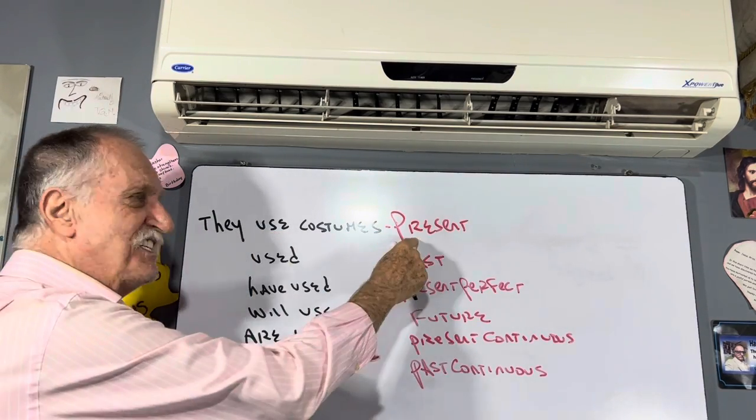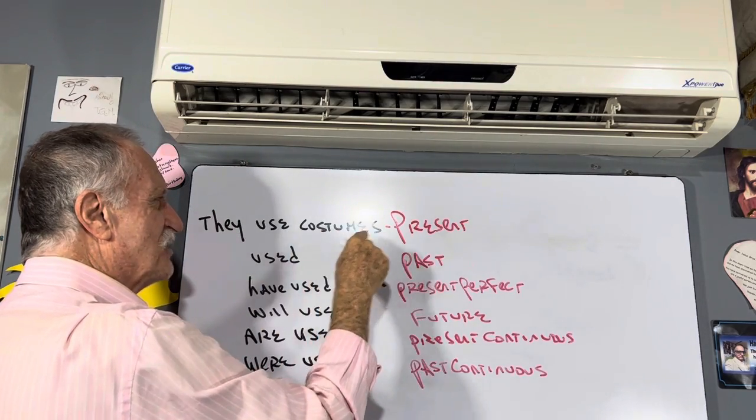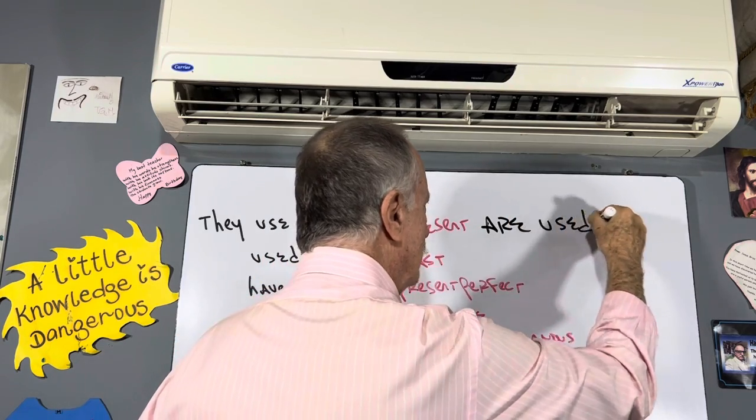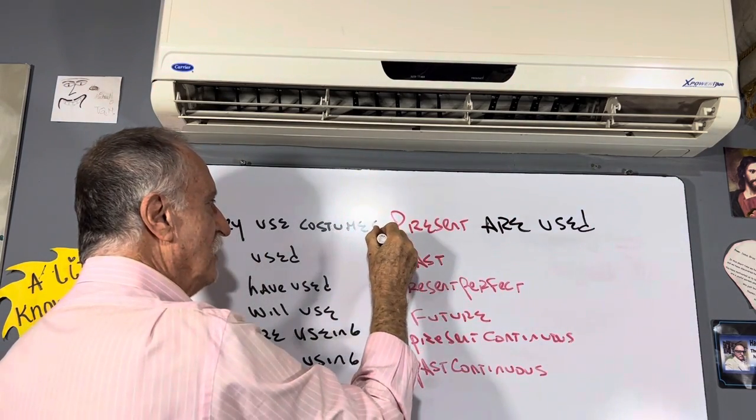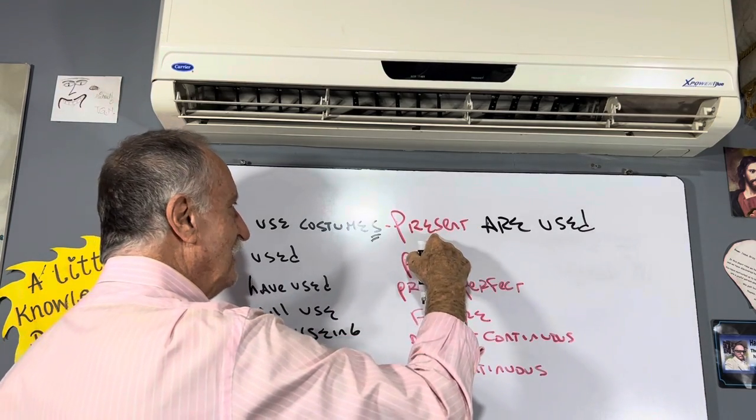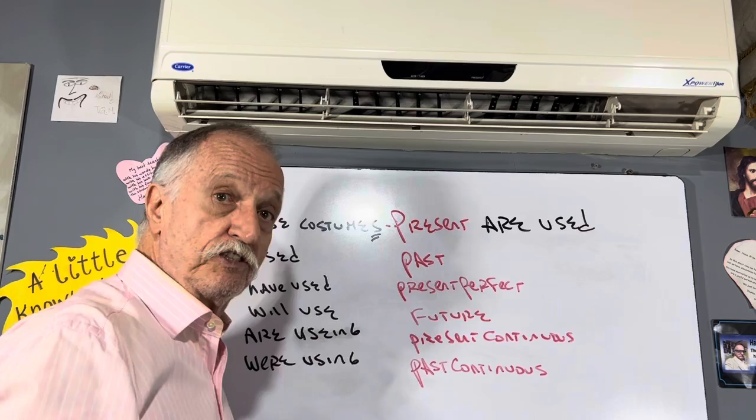They use—that's present. They use costumes. Costumes is plural. Are used. Take the costumes, take the verb to be in present, take the verb participle. Are used.